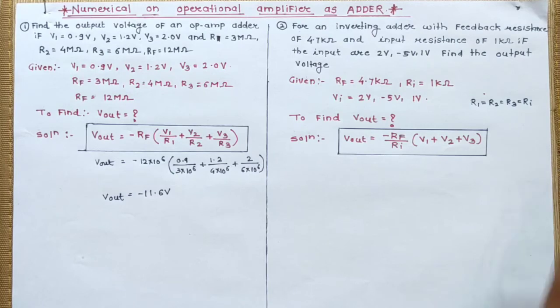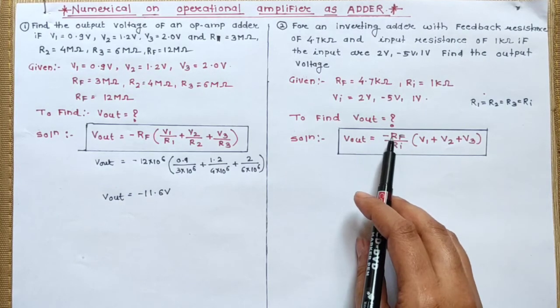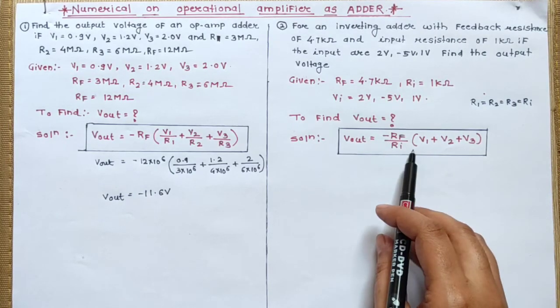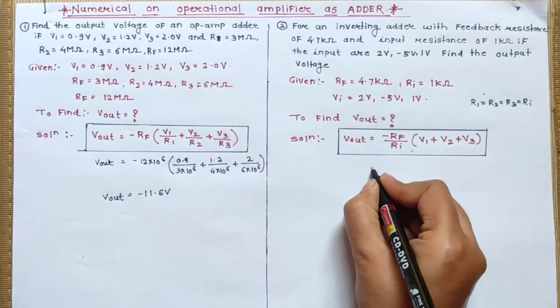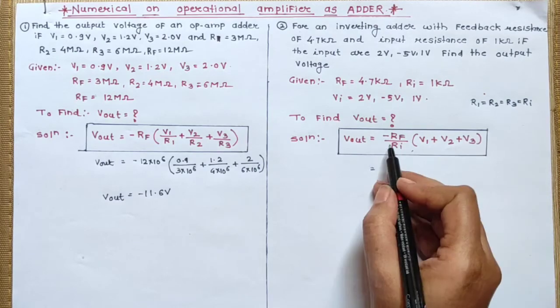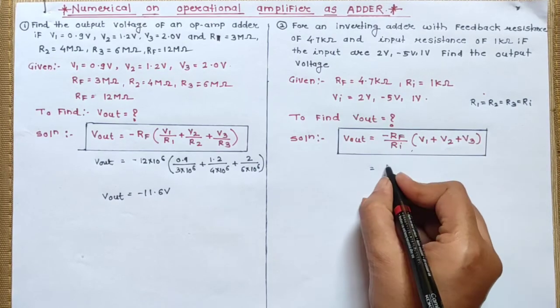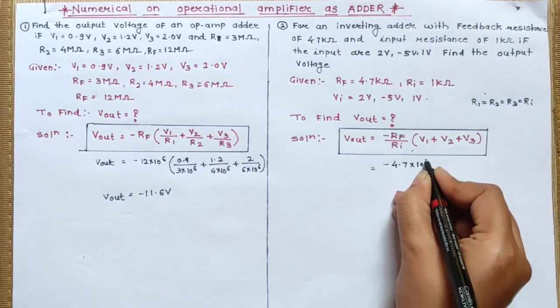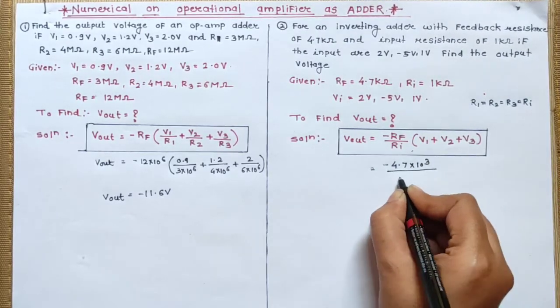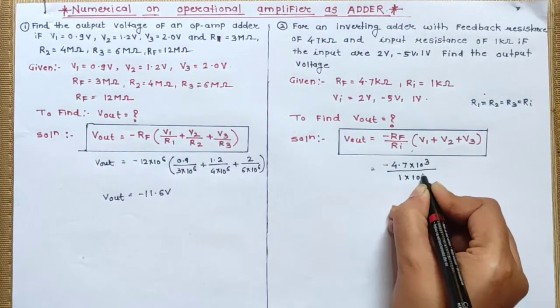So which formula you have to use to find the output voltage? So Vout equals minus Rf upon Ri in bracket V1 plus V2 plus V3. So let's put, what is the value of Rf? Minus 4.7 into kilo is 10 raised to the power 3 upon 1 into 10 raised to the power 3.